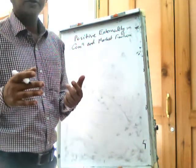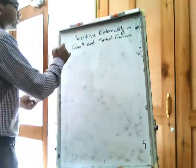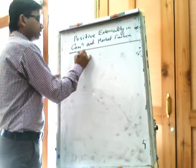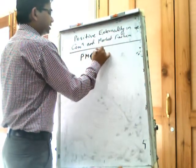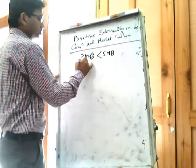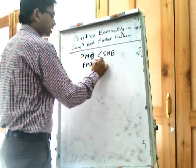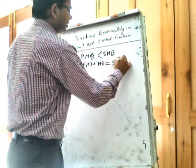This street light will affect everyone positively. That means in this case, private marginal benefit is less than social marginal benefit. We can write that private marginal benefit plus marginal benefit equals social marginal benefit.